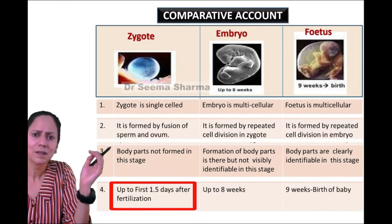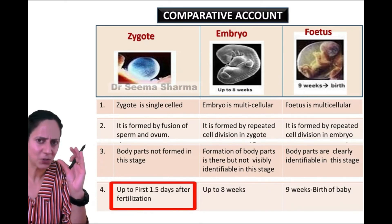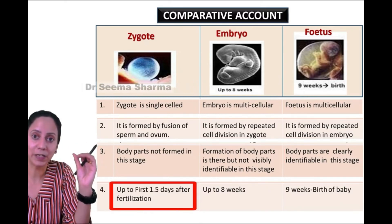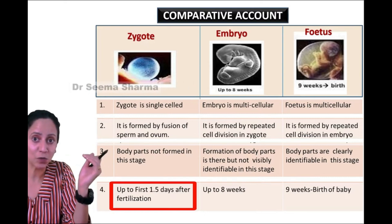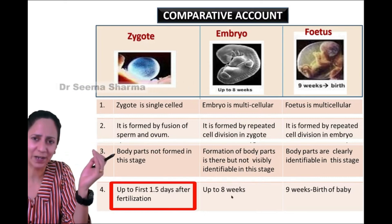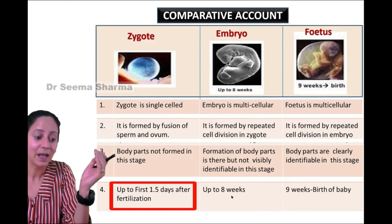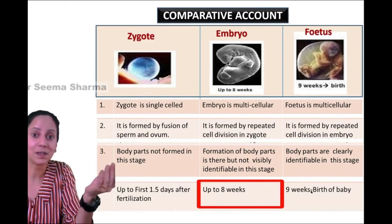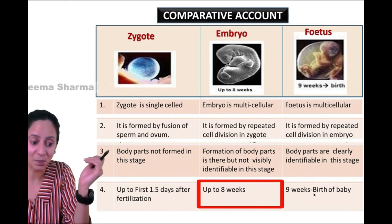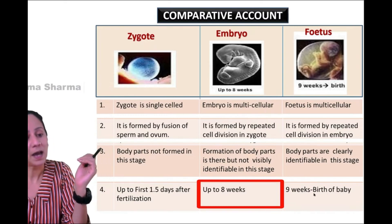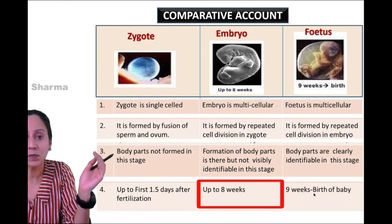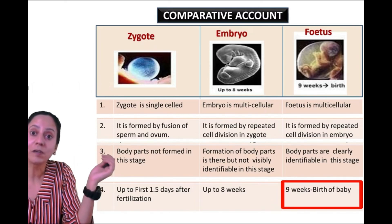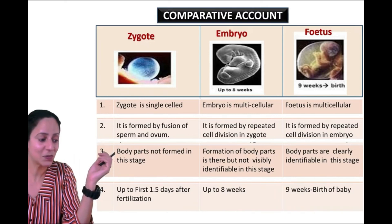Fourth point: the zygote is the shortest stage of embryonic development — in the case of human beings, just one and a half days. Thereafter, up to eight weeks it is called embryo, and from the ninth week until the baby is delivered, it is called fetus.